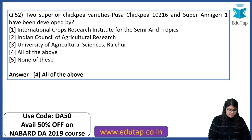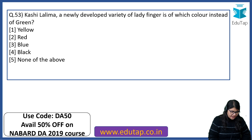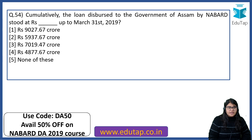Kashi Lalima, the newly developed variety of ladyfinger, is of which color instead of green? The right answer is red — so instead of green it is red. Cumulatively, the loan dispersed to the government of Assam by NABARD stood at Rs. 4,877.67 crore up to March 31st, 2019.